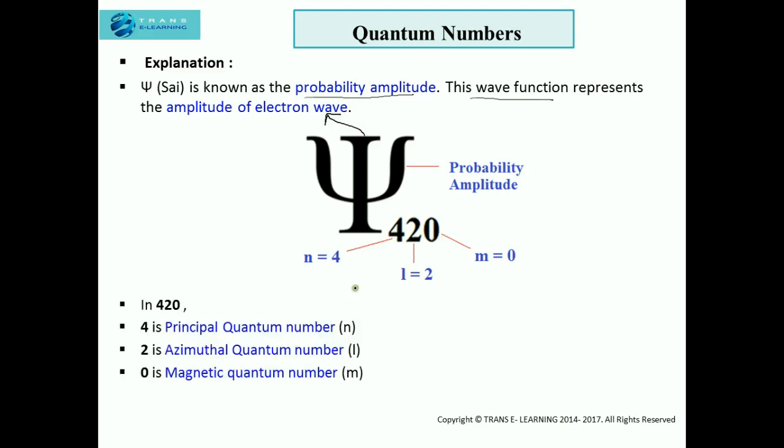The first numeric value indicates the principal quantum number, which is 4 in this case. The second numeric value indicates the azimuthal quantum number, which is 2. The third numeric value indicates the magnetic quantum number, which is 0 in this case.